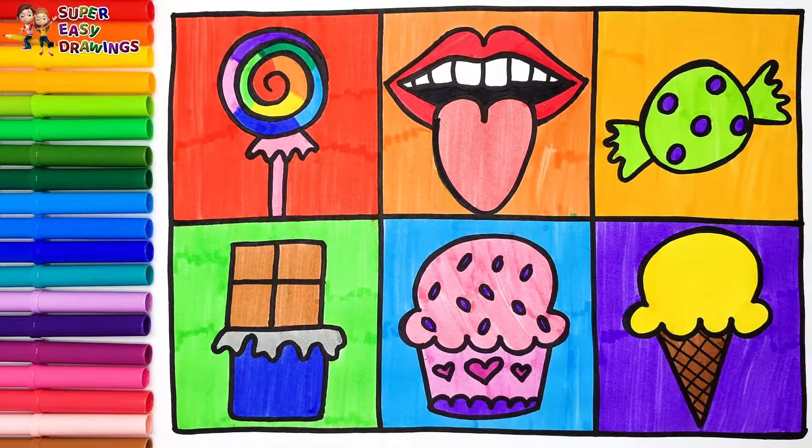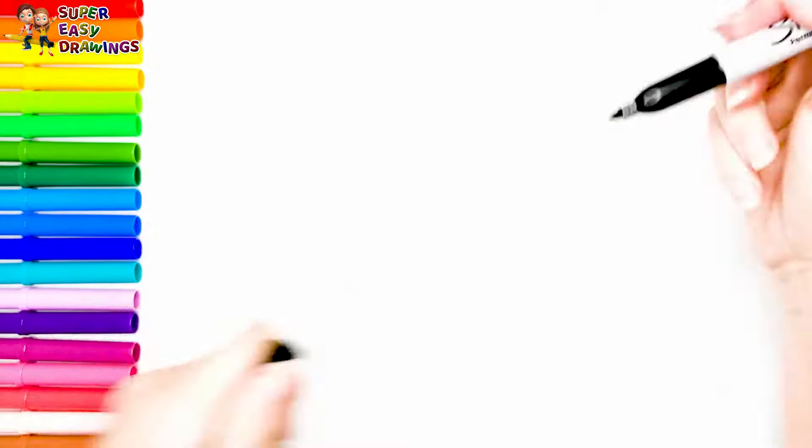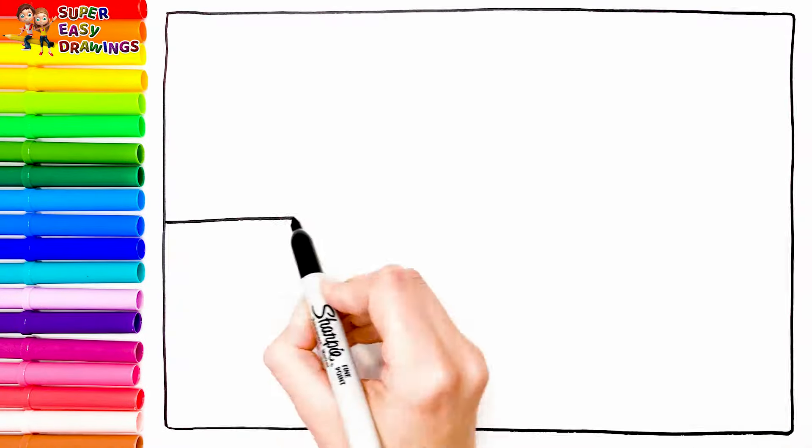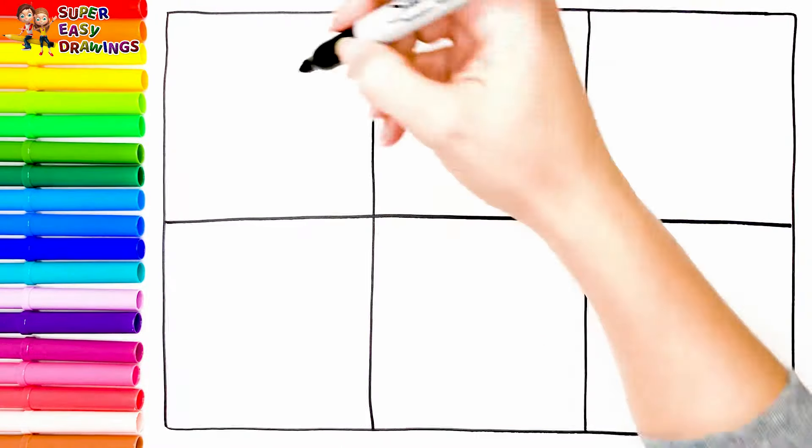Today, we're going to draw and color sweets and candies. At first, I'm going to draw a big rectangle like this. Then I divide it into six small squares.